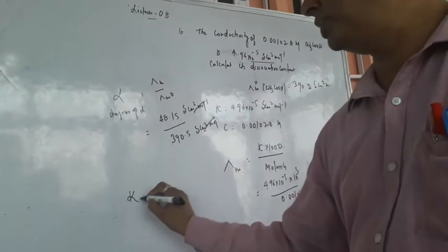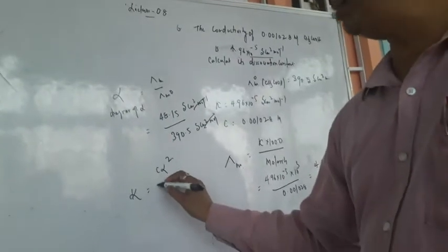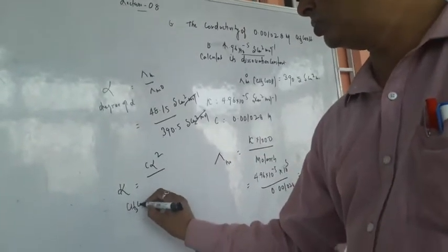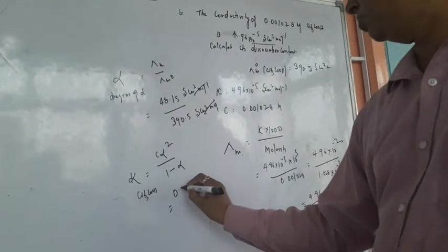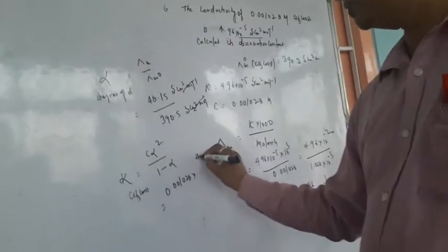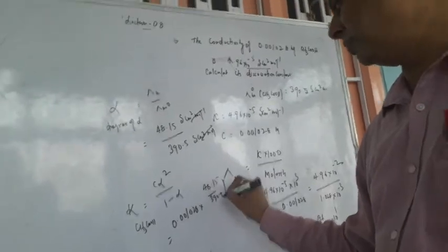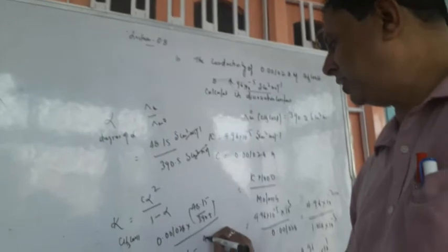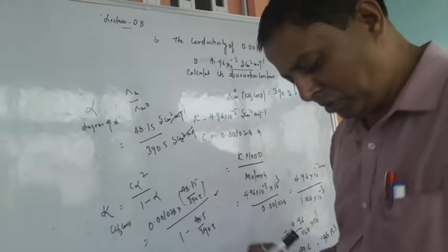Now we have to calculate the dissociation constant K = Cα²/(1−α), as we have already derived. The dissociation constant of acetic acid equals C × α² divided by (1−α). Concentration is 0.001028, alpha is 48.15 divided by 390.5, and (1−α) is 1 minus 48.15 by 390.5. This gives the dissociation constant of acetic acid.